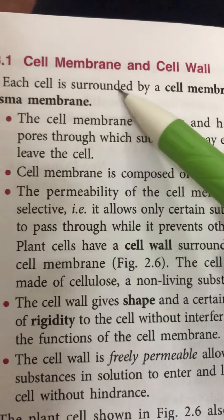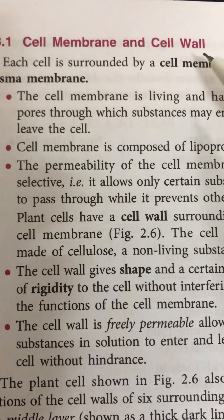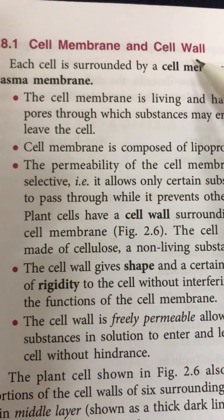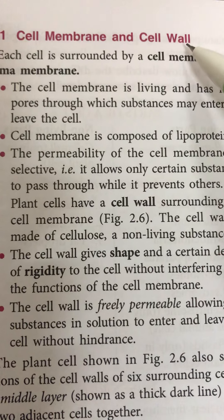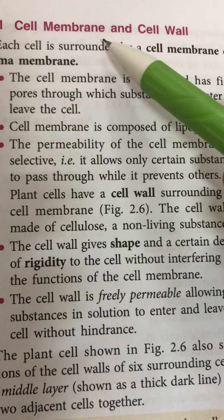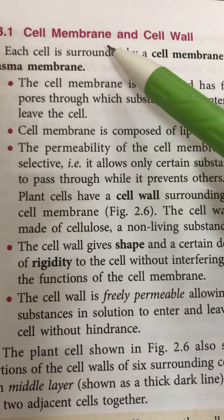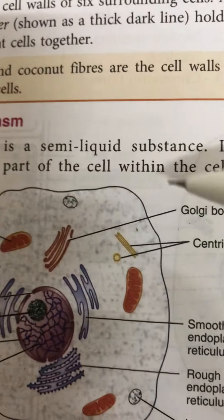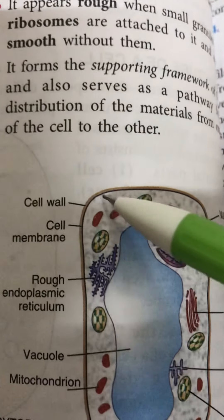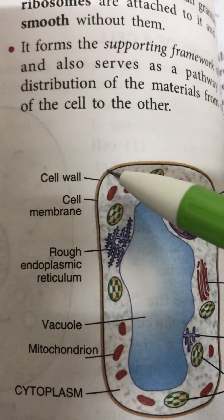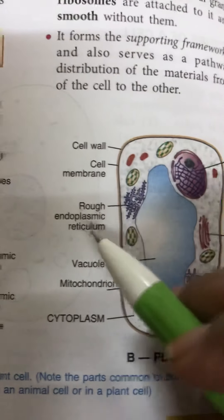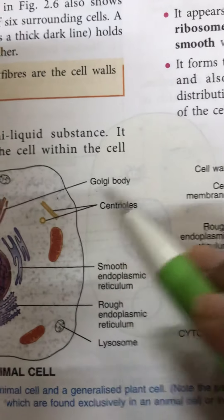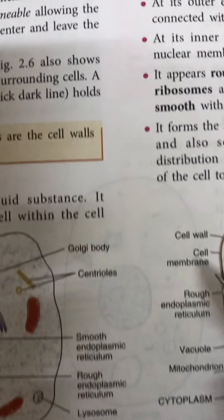Now let's discuss the differences between cell membrane and cell wall. A cell wall can be seen only in a plant cell, whereas a cell membrane is found both in plant and animal cells. This is an animal cell surrounded by a cell membrane, but in a plant cell, outside the cell membrane there is a cell wall. So the first difference is: cell wall is present only in a plant cell, but cell membrane is present in both animal and plant cells.